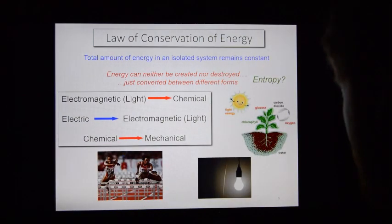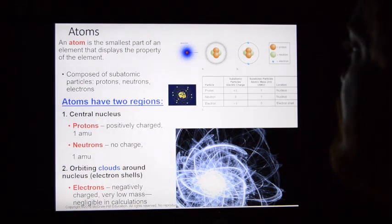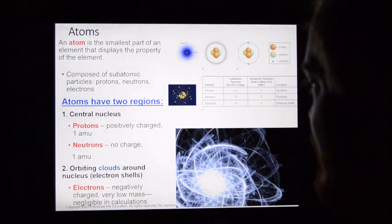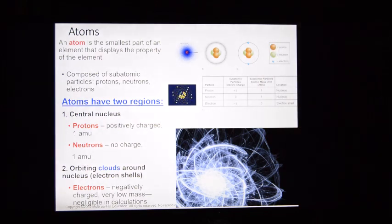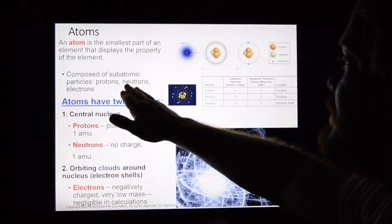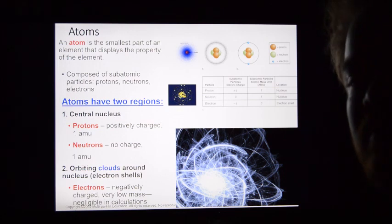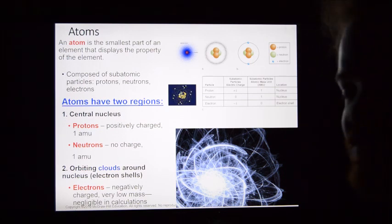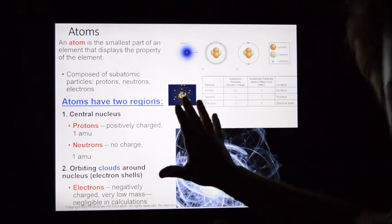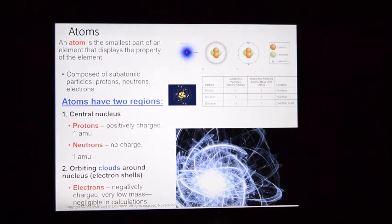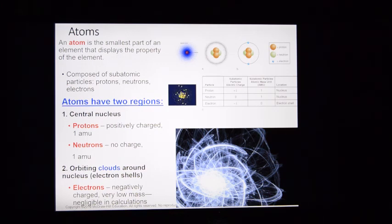Atoms are the smallest part of an element that displays the properties of that element — like hydrogen, helium, and neon. These are atoms in the world around us, and they're composed of subatomic particles. Each atom is composed of protons, neutrons, and electrons. You need to be familiar with this — it outlines pretty much everything you really need to know about atoms. Go through it, then rewind and do it again just to be clear.